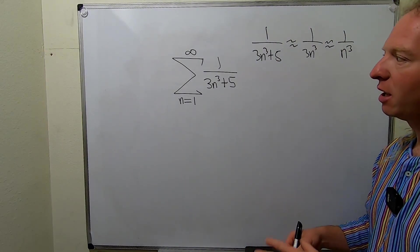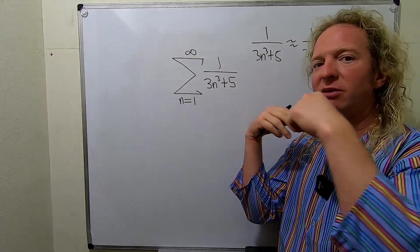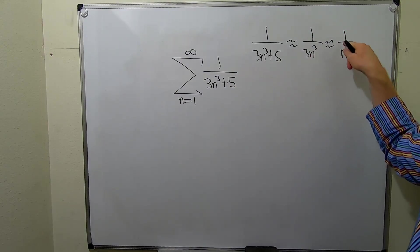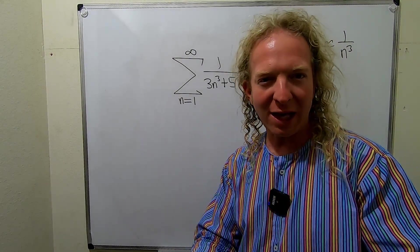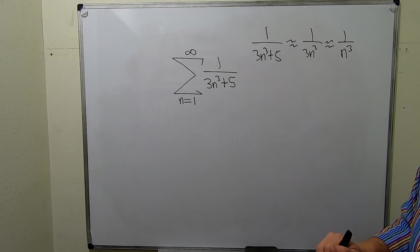Intuition tells us we only need to worry about the terms of highest degree. We can ignore everything else and it's like 1 over n cubed, so this should behave like a p-series, in particular a convergent one because p is 3, which is bigger than 1.